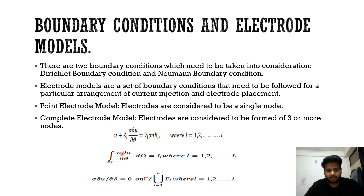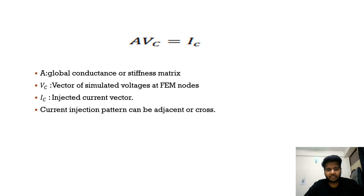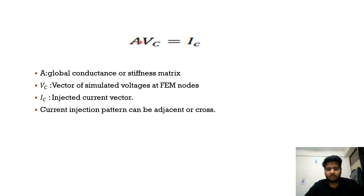The complete electrode model equations can be formulated as A·Vc = Ic, where A is the global conductance or stiffness matrix, Vc is the vector of simulated voltages at finite element model nodes, and Ic is the injected current vector. The current injection pattern can be adjacent — injecting current between two adjacent electrodes — or cross, meaning current is injected between two opposite electrodes. Our goal is to find this global conductance or stiffness matrix, and once found, we can use this equation to solve the forward problem.